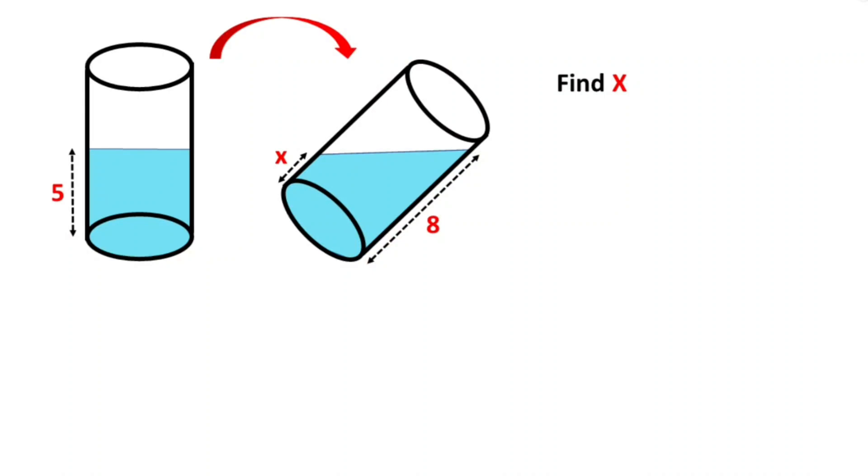Hello everyone, in this video we have one vertical cylinder and there's some water inside. In first case, the height of the water is given 5 units. And second case, the cylinder is turned so that the water length becomes 8 units.